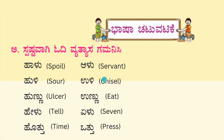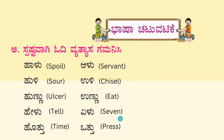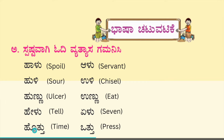Now observe the following words and note the difference. Halu and Aalu have the same pronunciation but different meanings. For example: Halu means spoil, Aalu means servant; Huli means sir, Uli means chisel; Hunnu means ulcer, Hunnu means to eat; Halu means tell, Halu means seven; Hattu means time, Hattu means to press.